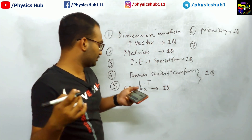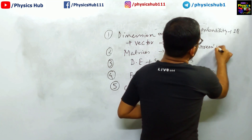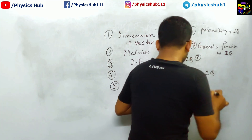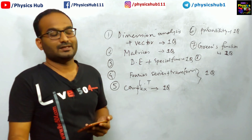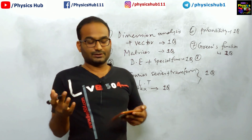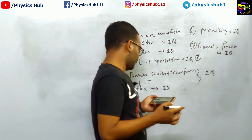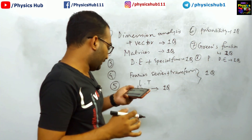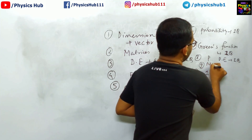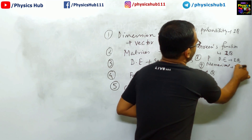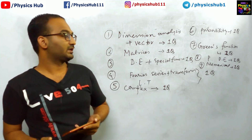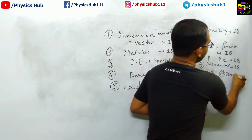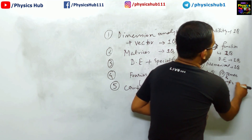For the advanced portion: seventh is Green's function — in almost every alternate paper you get a question from Green's function, worth 5 max. Eighth is partial differential equations including Laplace, wave, and heat equations, which may give one question and is highly probable this time for 5 max. Ninth is numerical analysis, which will definitely give one question as the advanced part is mainly occupied by numerical analysis techniques. Tenth is group theory and tensors, which may also give one question.